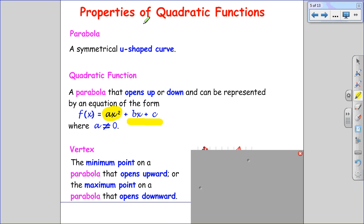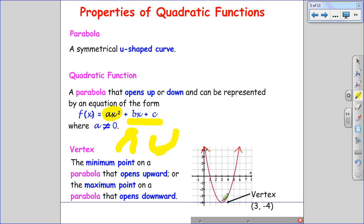The vertex of a quadratic function is a very important location and it tells us a lot of information. It gives us the minimum value on a quadratic that opens upward. It gives us the maximum value on a quadratic that opens down. So if you look at the quadratic right here, the point (3, -4) indicates the vertex.